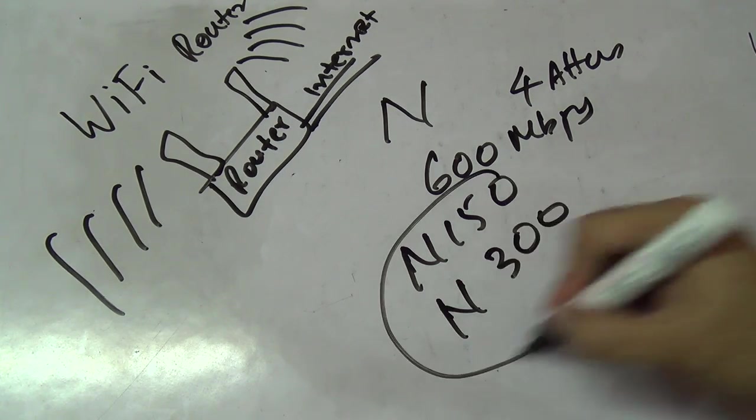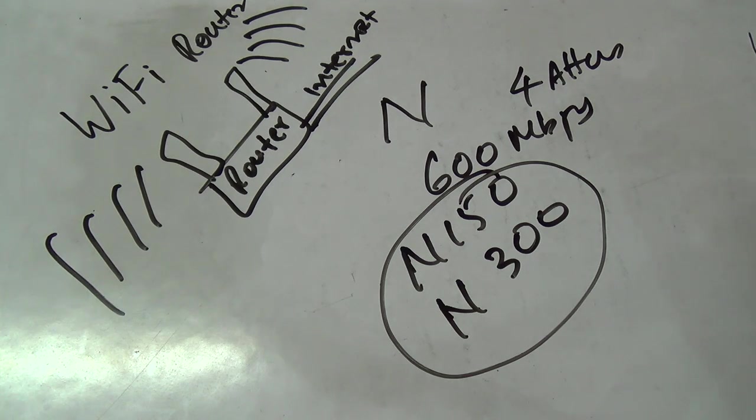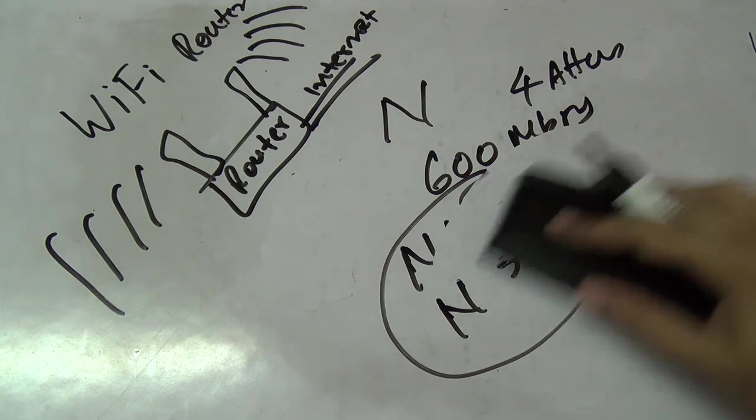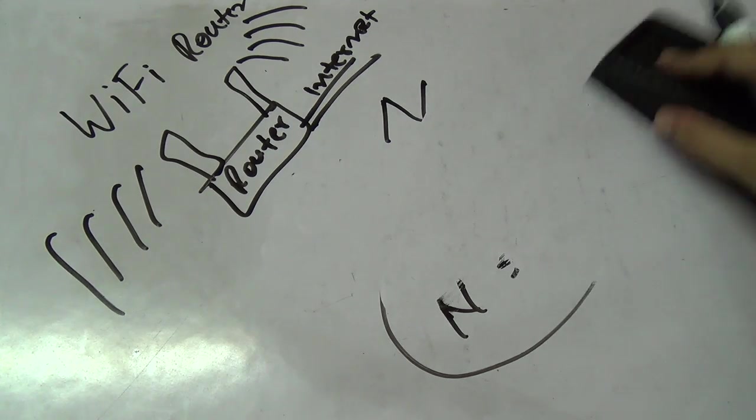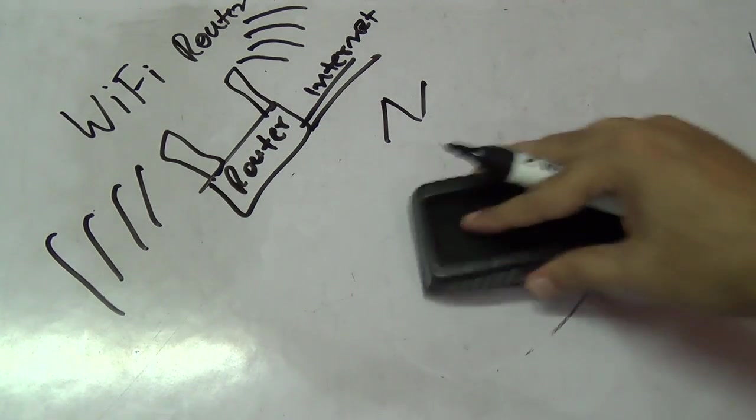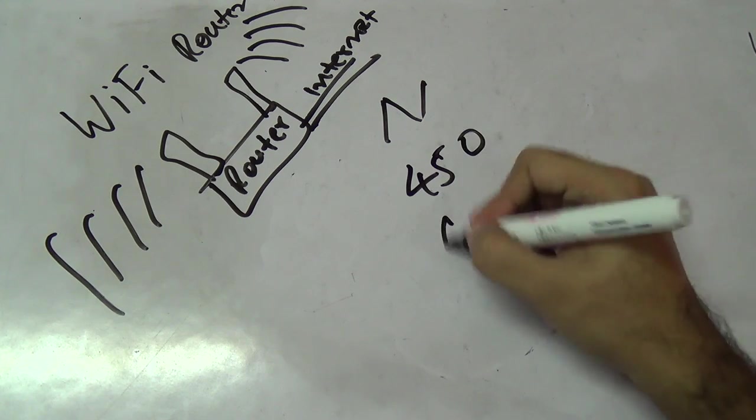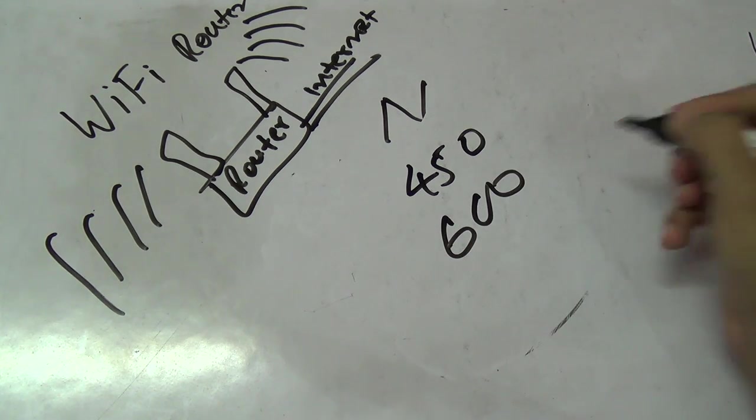But the most common are n150 and n300. These are the most common ones that we find these days and they're pretty affordable. We do also have n450 and n600, but again, they're a little bit rare.